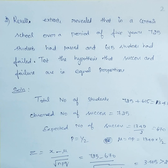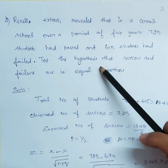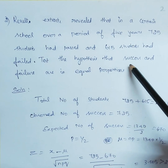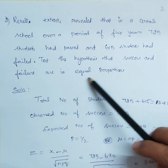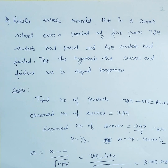Let's see a problem. An extract revealed that in a certain school over a period of five years, 725 students had passed and 615 students had failed. Test the hypothesis that success and failure are in equal proportions.